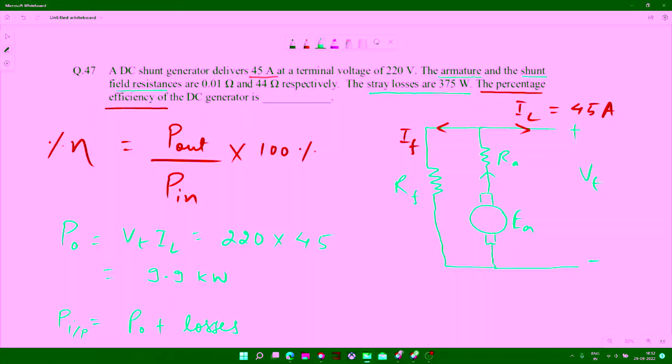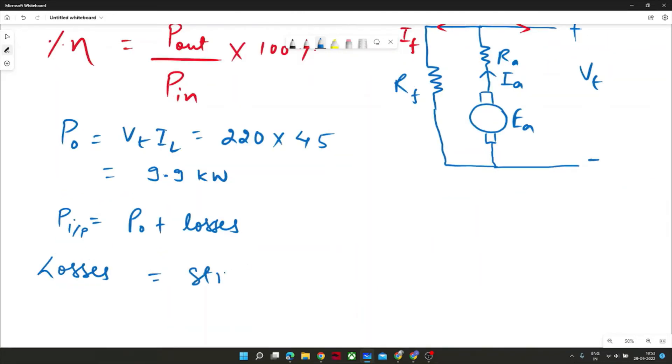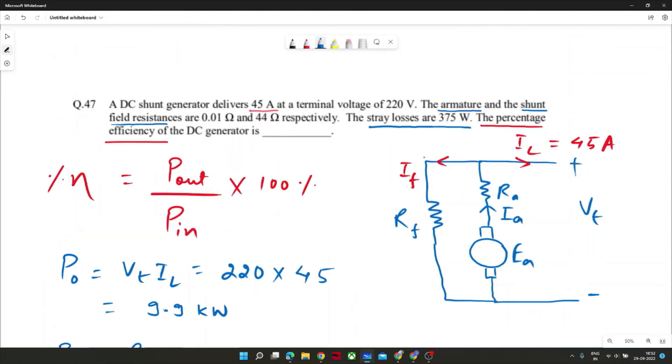Field component and armature, correct. Perfect. So one would be Ia square Ra and one would be If square Rf. So stray loss plus Ia square Ra plus If square Rf. We did not calculate If yet. So If would be straightforward Vt by Rf. Vt is given, Rf is also given, 44 ampere. It would be 220 by 44 and it would come out to be 5 ampere.